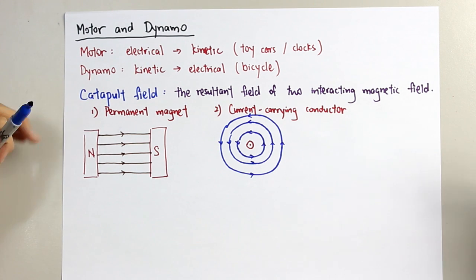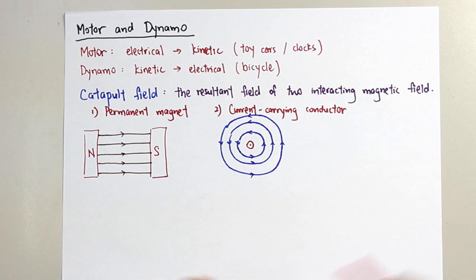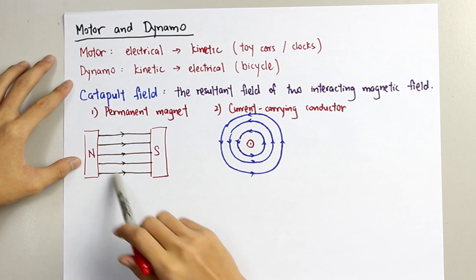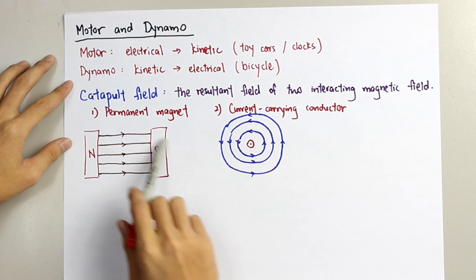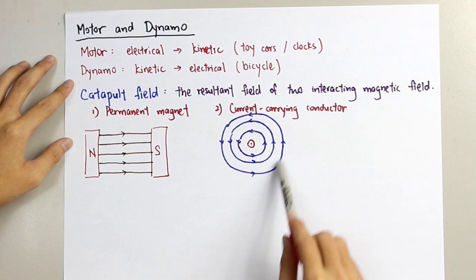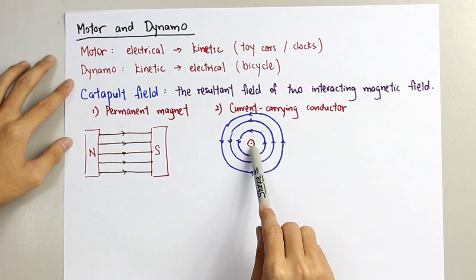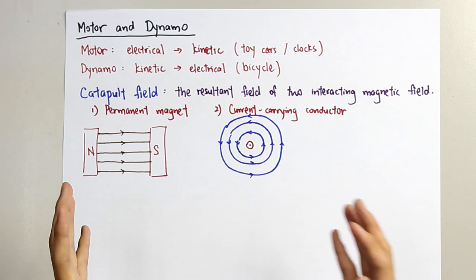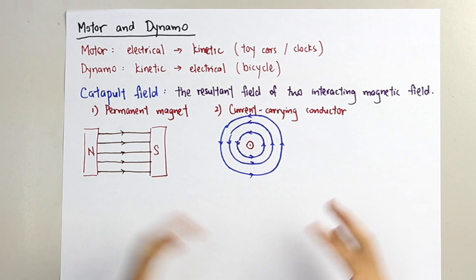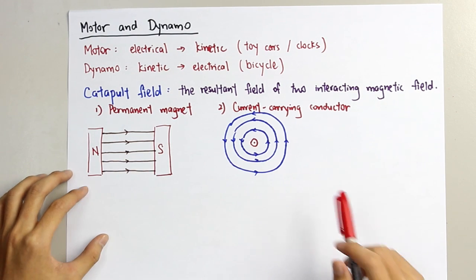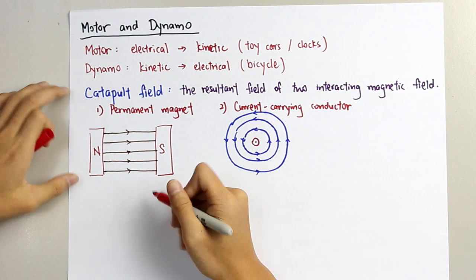Here comes the special part — when we have two interacting magnetic fields. The first magnetic field is from the permanent magnet, and the second magnetic field is from the current-carrying conductor, in this case the wire. When two magnetic fields are interacting, that means we place the wire in between the permanent magnets.